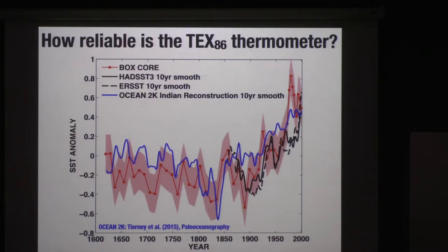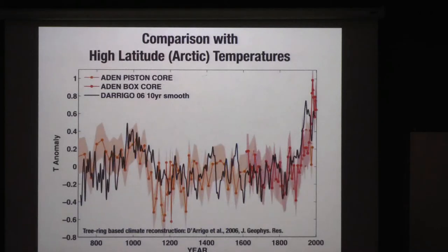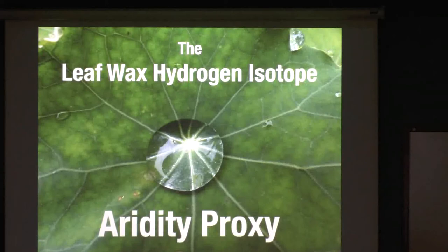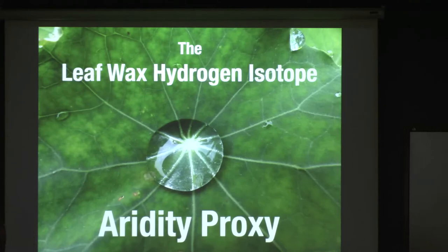In short, I feel we have good confidence in the ability of TEX86 to record temperatures in this place. What's interesting about this particular record is that it's somewhat unconventional. Most people who work on the last millennium think of the Medieval Warm Period — warm conditions about a thousand years ago in Europe — as occurring around 1200 to 400 AD. We actually see warmer conditions in the first millennium, which is closer to what we see with some Arctic reconstructions. This tree-ring-based Arctic reconstruction also has warmer conditions from 800 to 1000 AD. Regardless, we haven't seen huge changes in SSTs — just little ones — and the recent warming really stands out.